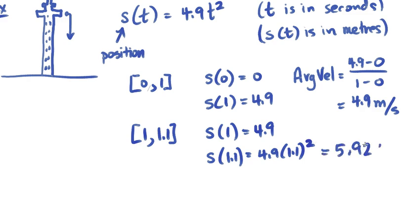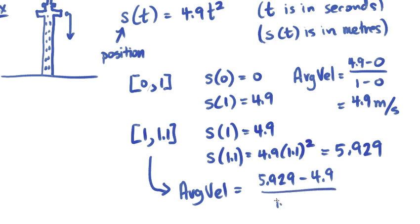So the average velocity between these two times is equal to where I ended up compared to where I started over the time frame where I ended up compared to where I started.